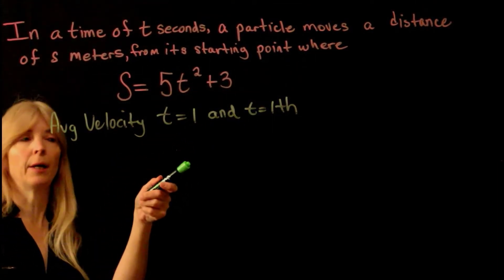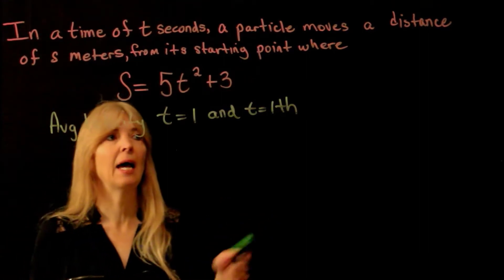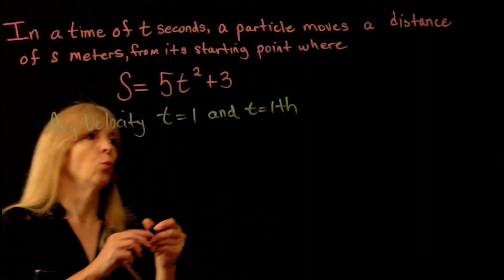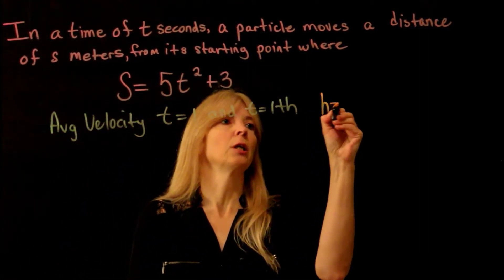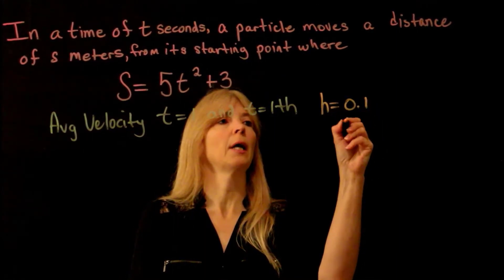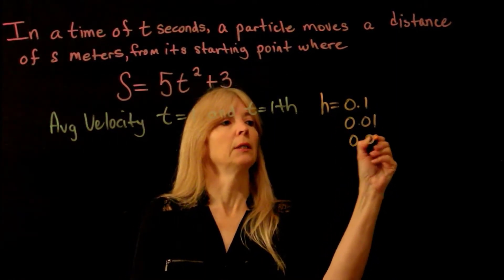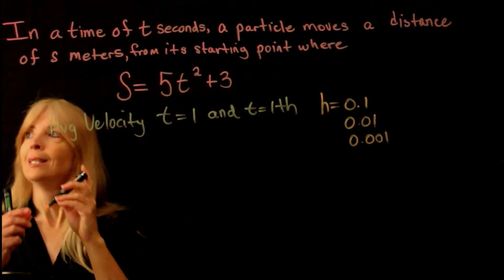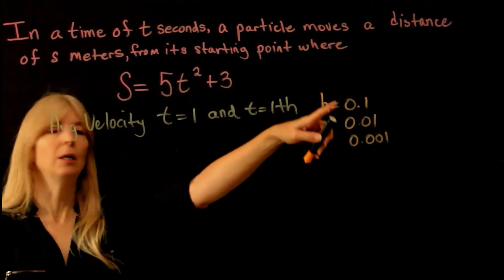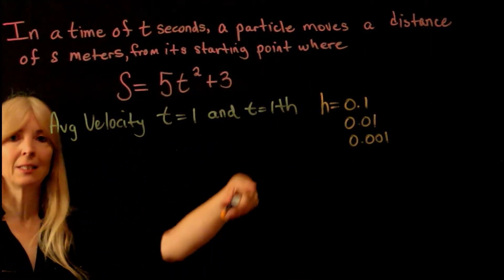So what we really want is 1. So what they have you do is they have you start with h equals 0.1 and then they have 0.01 and 0.001 to see ultimately what is it going to, our limiting value.